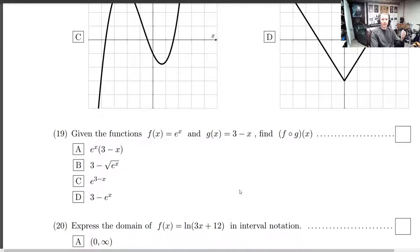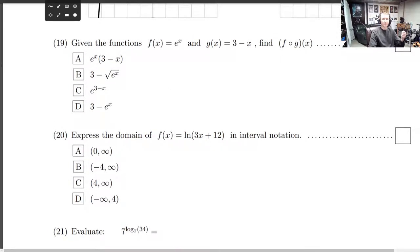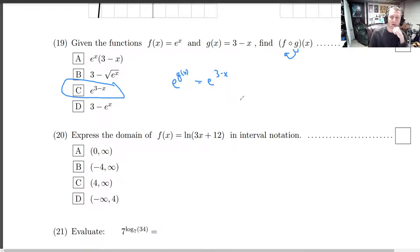Okay, we'll move on to the next problem then. Given this function, we'll do two here real quick. Given the functions f(x) = e^x and g(x) = 3 - x, find f of g of x. So this means we're going to plug g in to the function f. So this is e. And we're going to replace x with g of x. So that is e^(3-x). So there we have it. Not too bad at all.